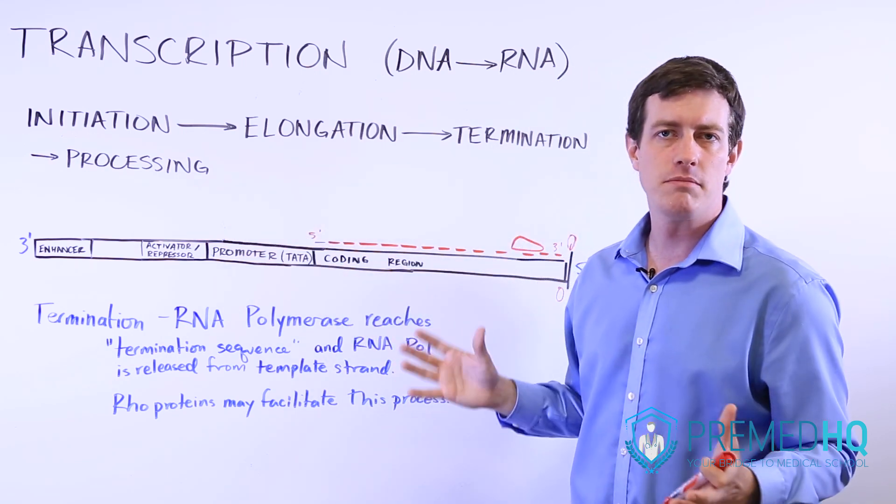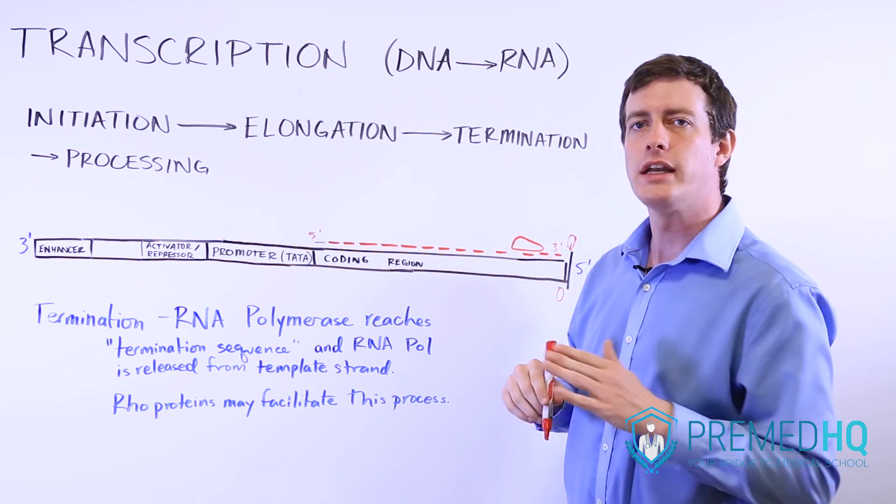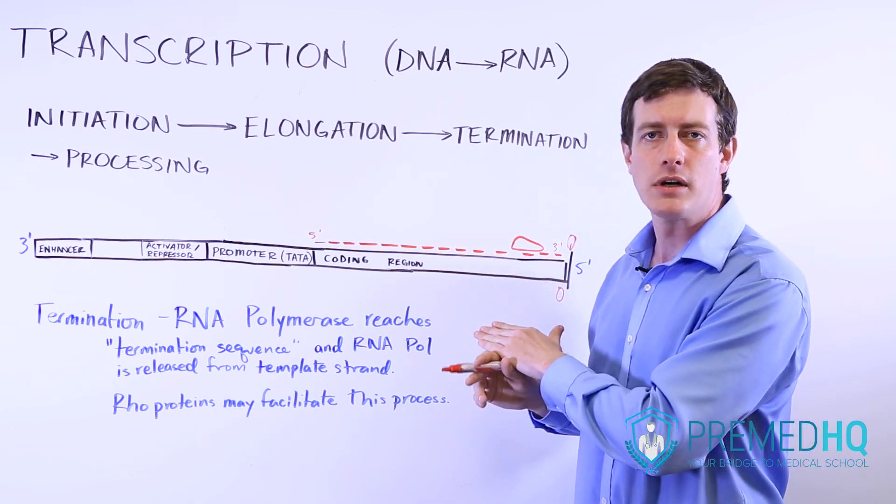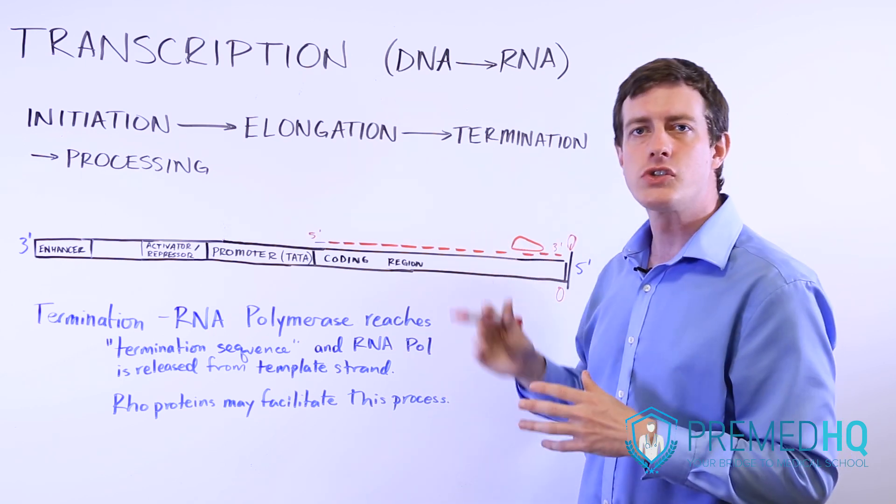and capping and adding a poly A tail. Then it will be ready to move on to the next phase of the central dogma, which is the translation of that mRNA into proteins.